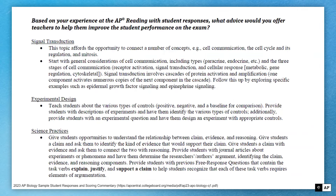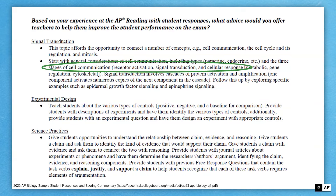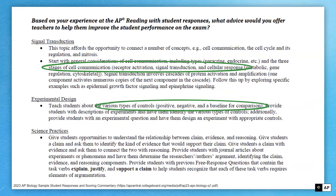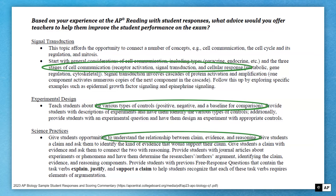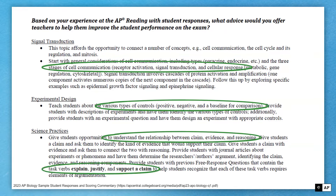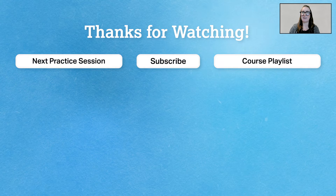Some advice for both teachers and students to enhance performance: review the stages of cell communication, as it is a major topic. In experimental design, look at various types of controls — positive, negative, and baseline for comparison — and choose the appropriate one. For science practices, understand the relationship between claim, evidence, and reasoning to help craft complete responses. Also review task verbs and what they require, such as the difference between 'explain,' 'justify,' and 'support a claim.' Overall, I hope this was helpful — get ready to crush your exam.